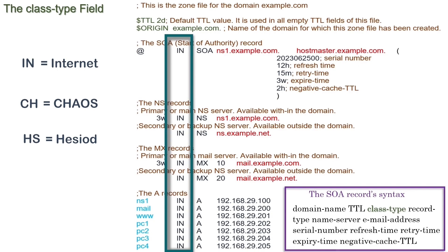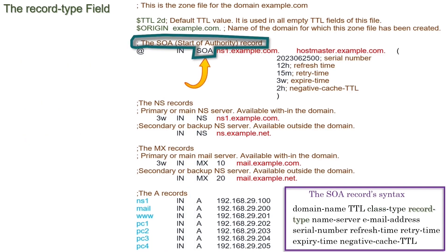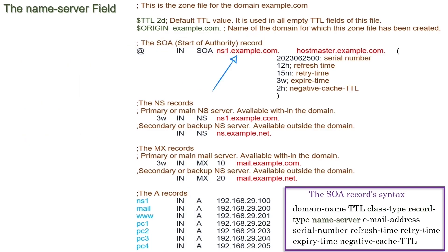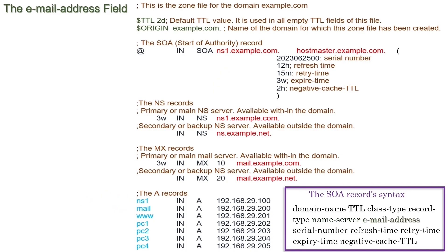CH and HS classes are used in special cases for specific reasons. This field defines the type of record. The next field defines the authorized name server for this domain — it only defines the authorized name server and does not map an IP address with it. To map an IP address with the authorized name server, we also need to create a host record for it.